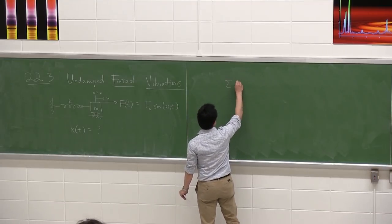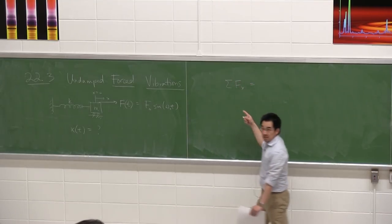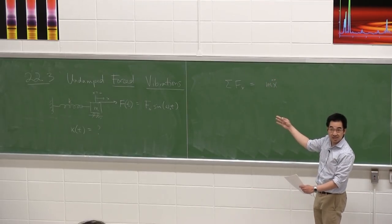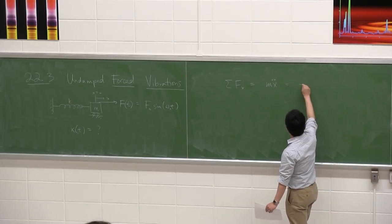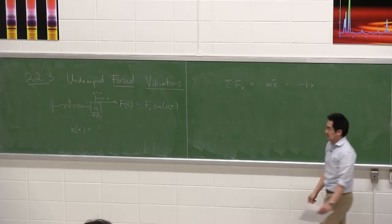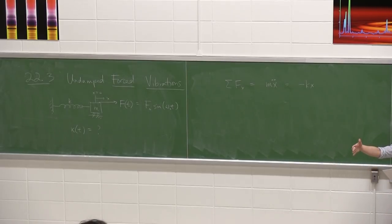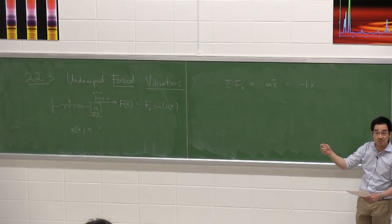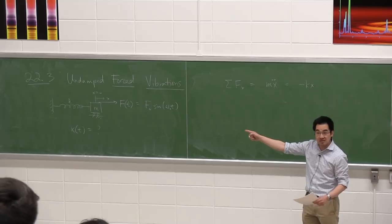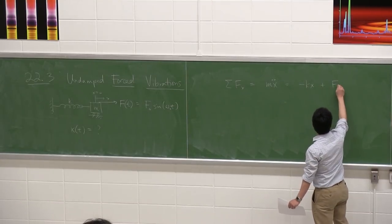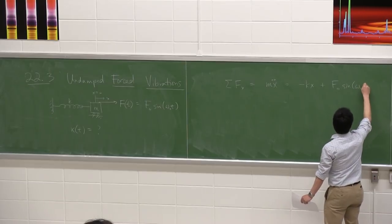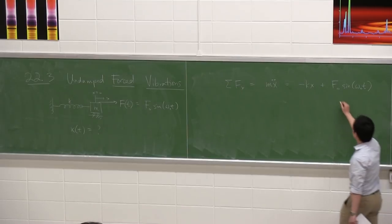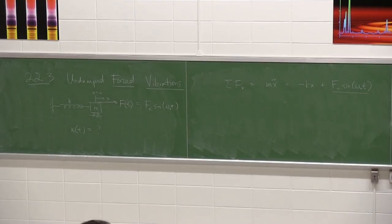Here's the setup. You look at your sum of forces in the x direction. The big change is mx double-dot equals negative kx, because the spring still acts to restore it back to neutral. The one new addition is we add an extra force term: F_0 sine(omega_0 * t) to the right-hand side.